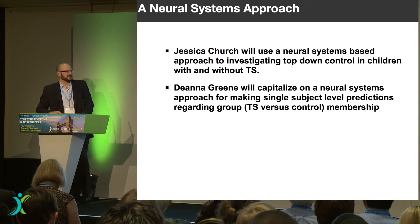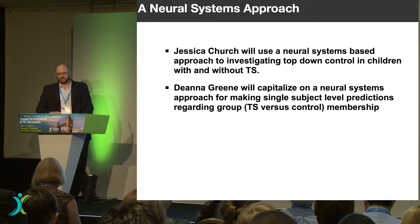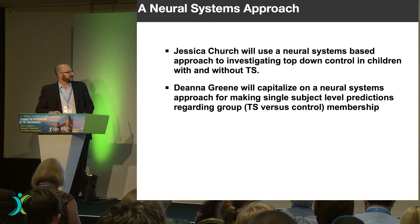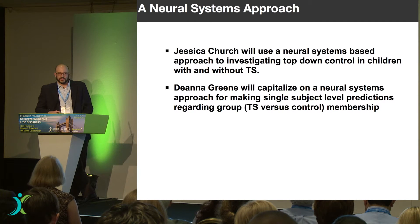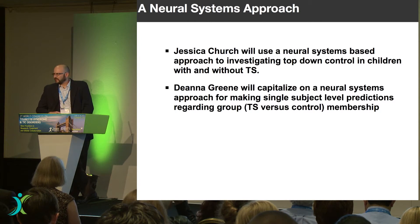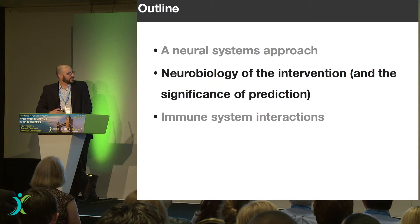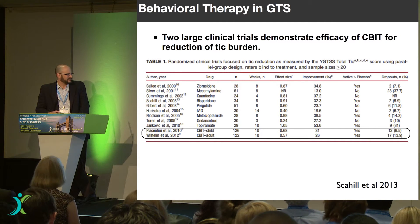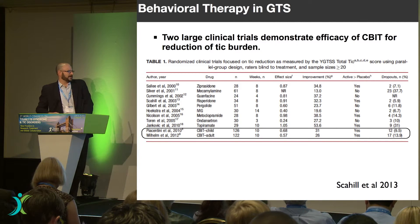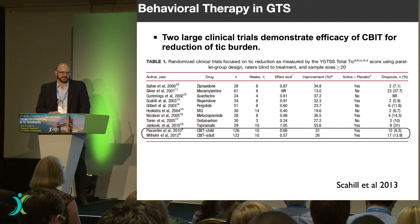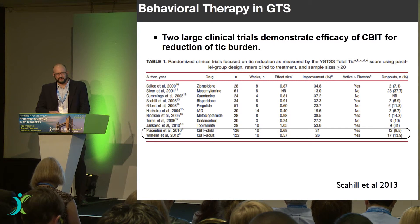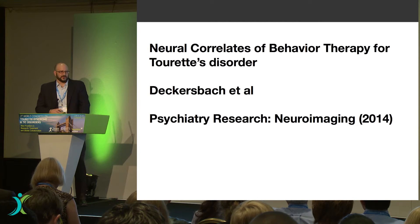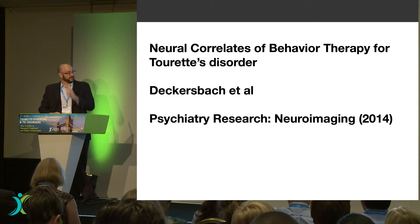Jessica and Deanna will use this systems-level approach to talk about top-down control in children with and without Tourette's, and Deanna will talk about using the systems approach to make predictions about group membership. Now, regarding the intervention: we know there have been a number of studies demonstrating a behavioral approach to treating Tourette's — the C-BIT child and adult studies of Piacentini et al. and Willem et al. But what we haven't heard a lot about is why or how behavioral therapy works, and why it works in some individuals and not others.